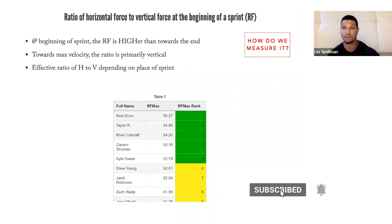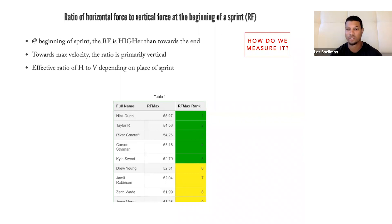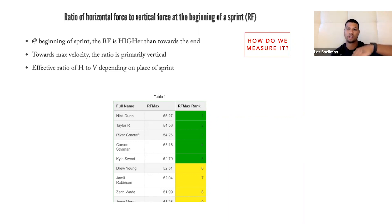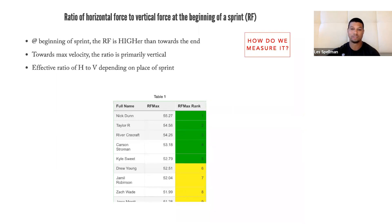This is measured through force-velocity profiling, which I'll go through in a second. At the beginning of a sprint, the ratio of force is higher than towards the end — it's at the highest in the beginning. Towards max velocity, the ratio is primarily vertical. What this means is my acceleration rate is determined by the ratio of how much horizontal force I have. It starts off very high as my acceleration rate is high, and as that acceleration rate drops off, it becomes more and more vertical. At the highest velocities, you're looking at vertical forces and vertical force demands.